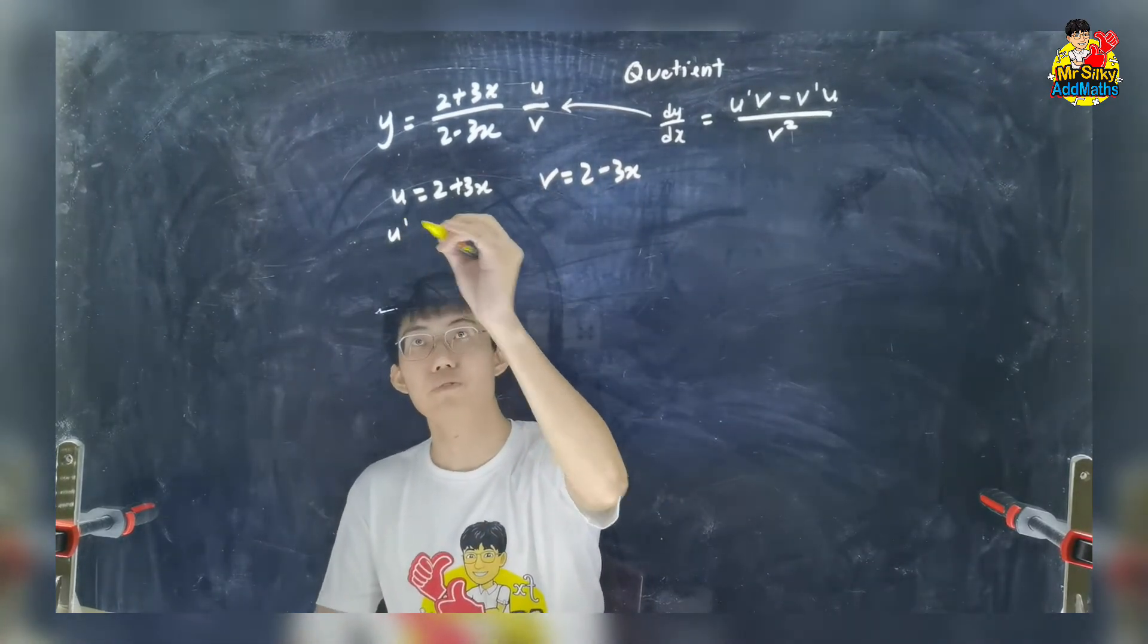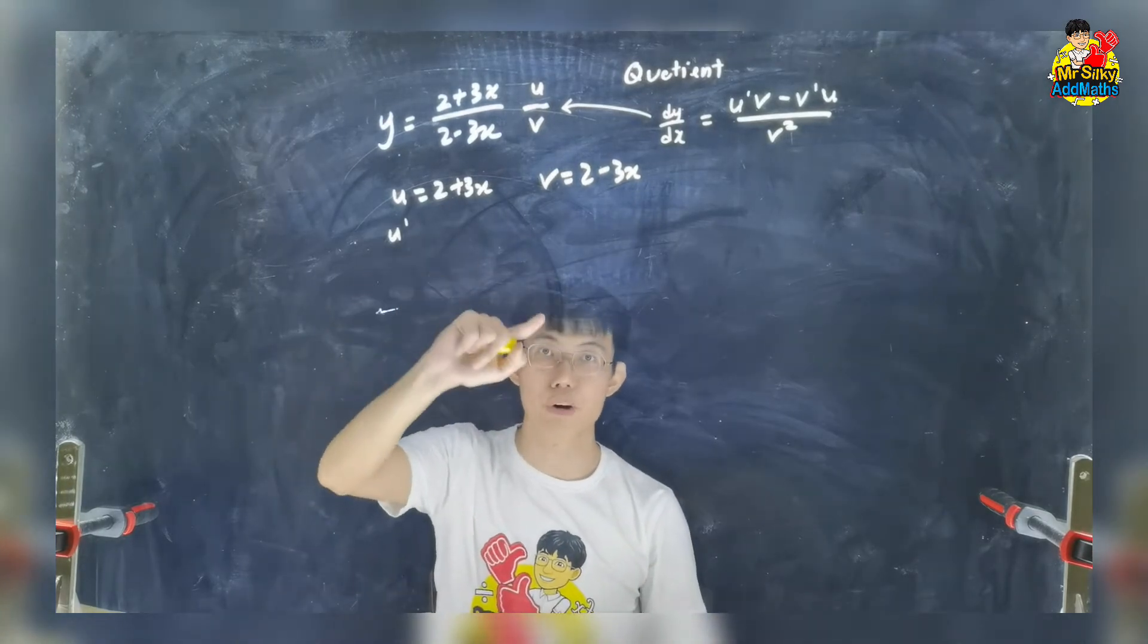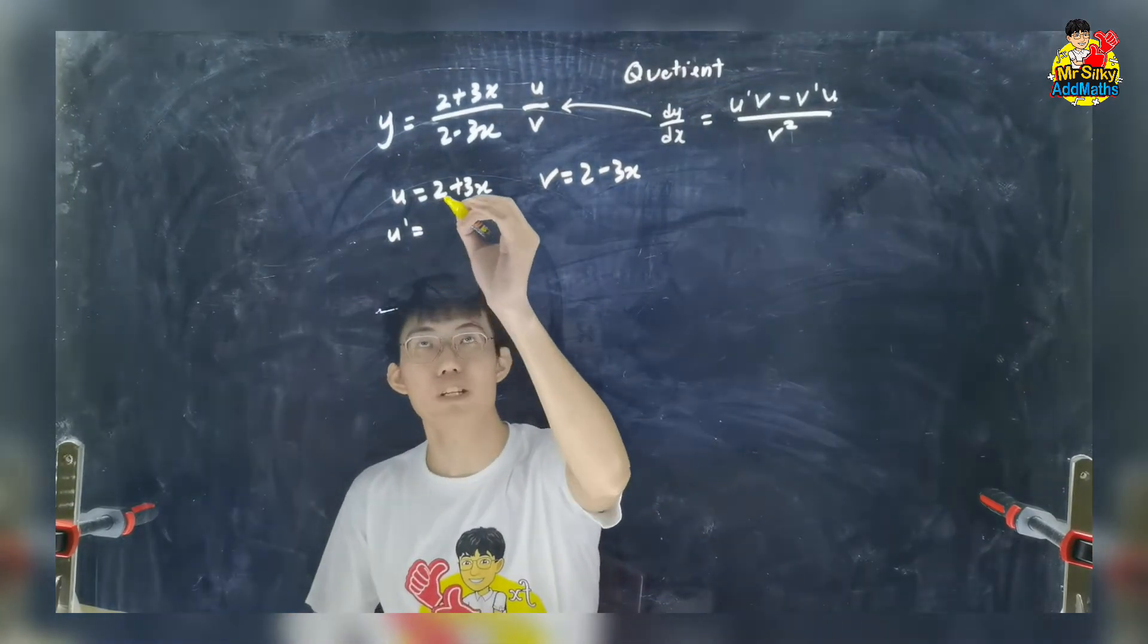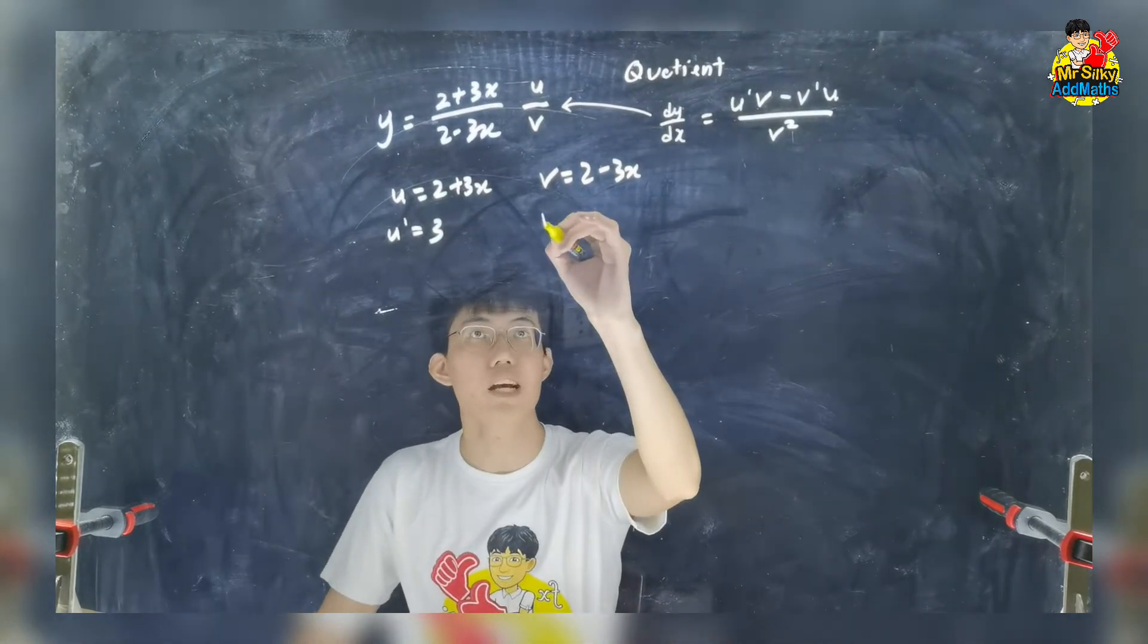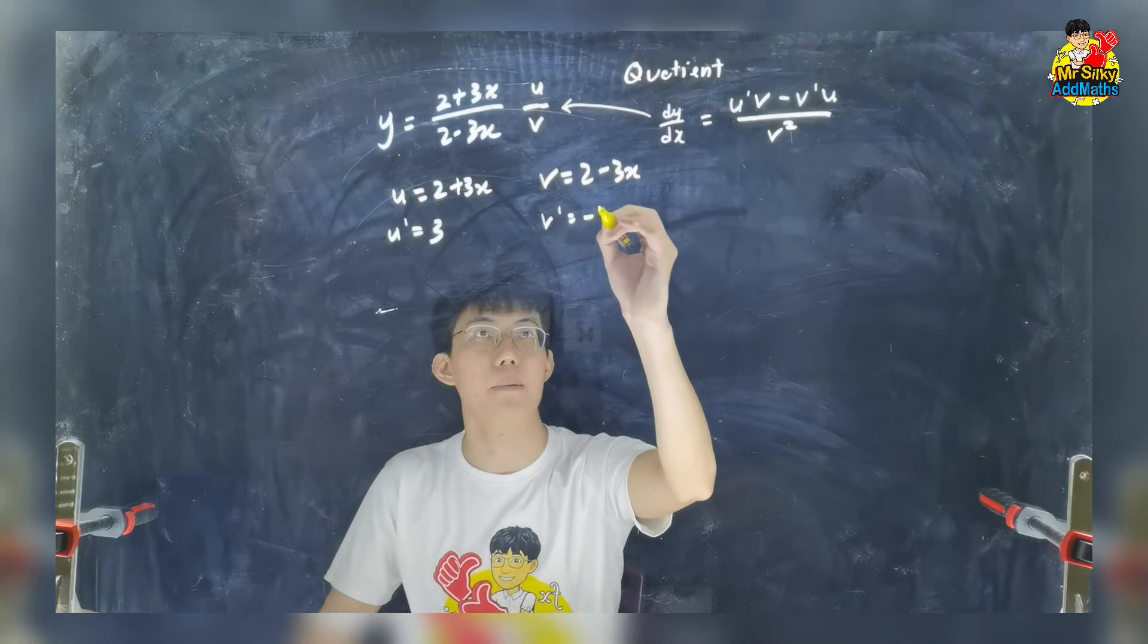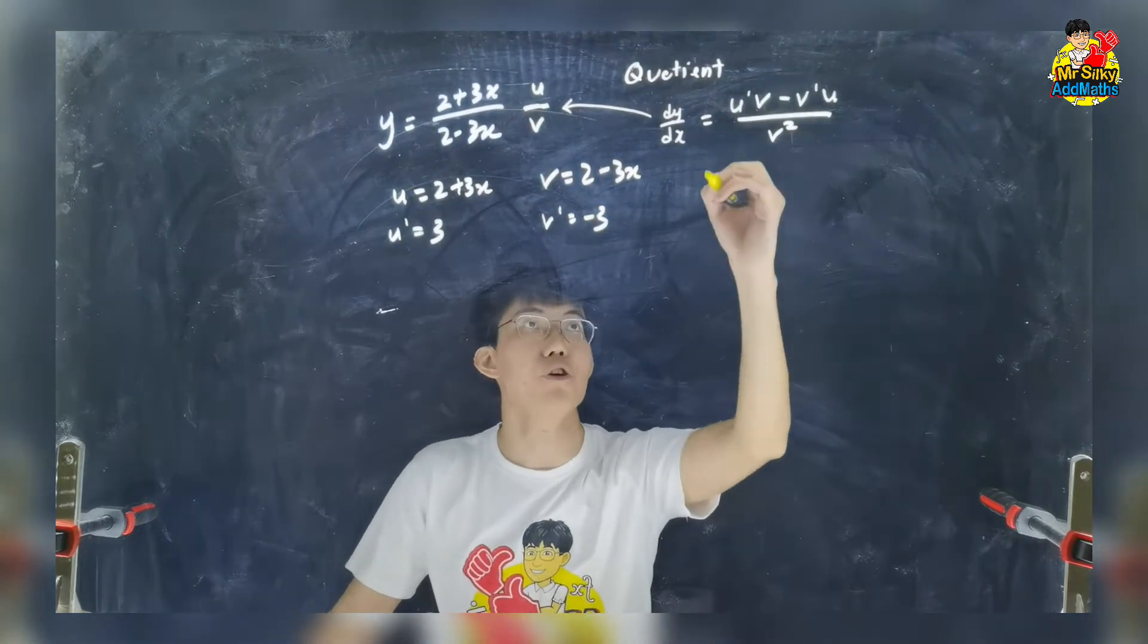So let's differentiate. When we differentiate u, I will get u prime. So I am differentiating the 2, get nothing. 3x, I just get the 3. Same goes to here, v prime. 2, I get nothing. I will just get minus 3. Now apply the formula.